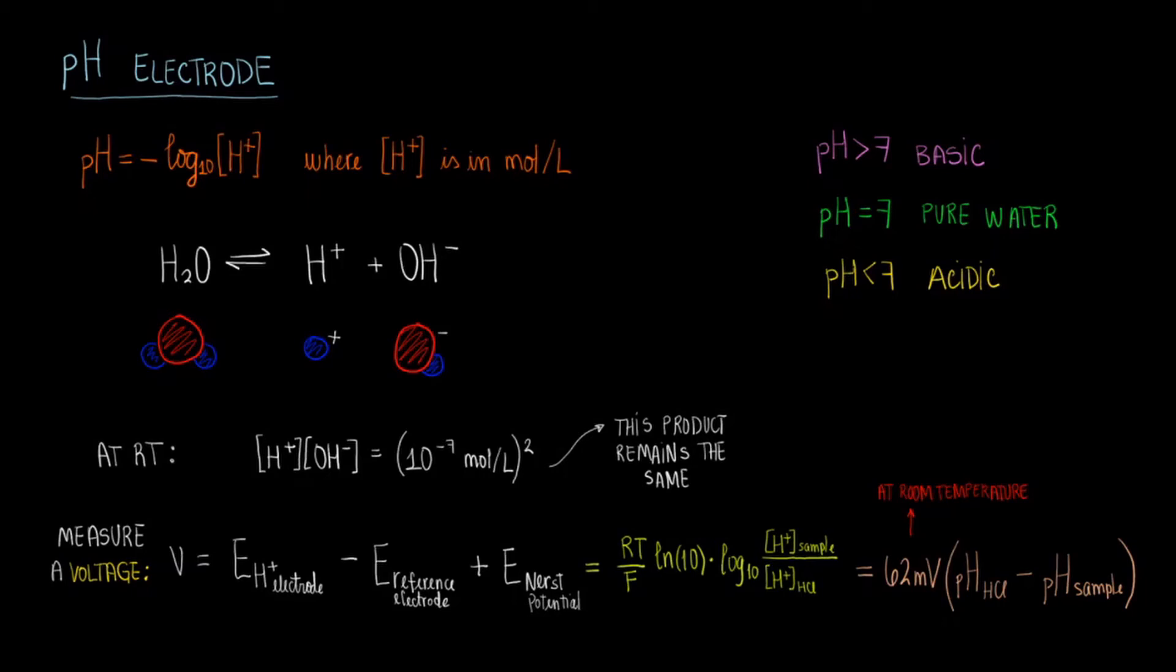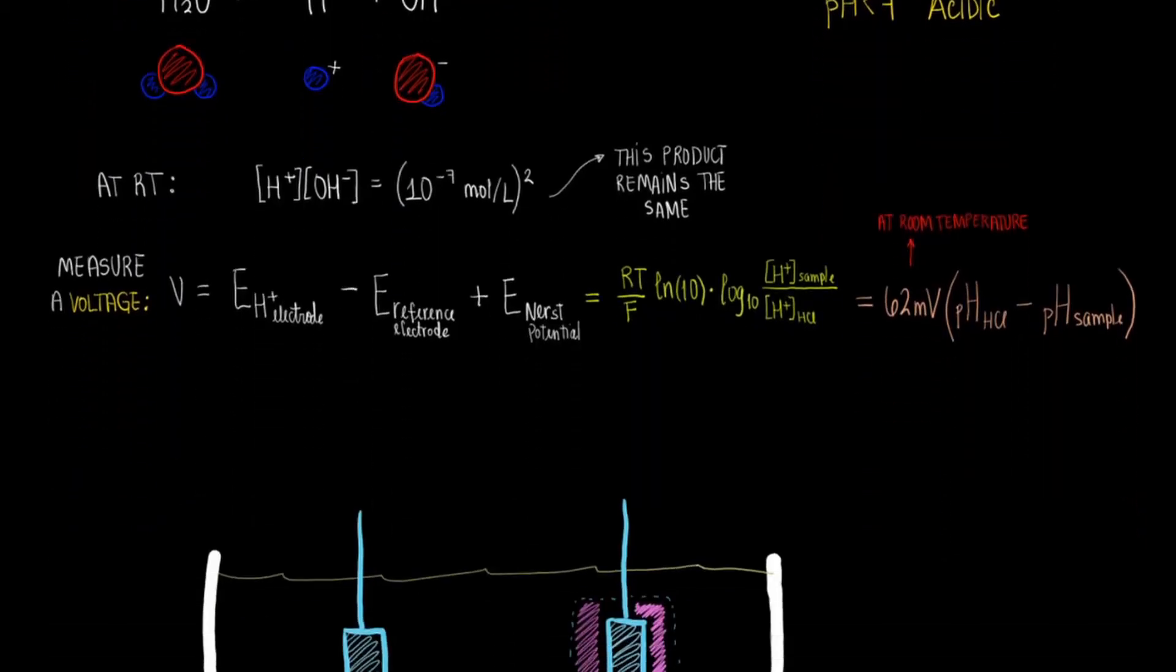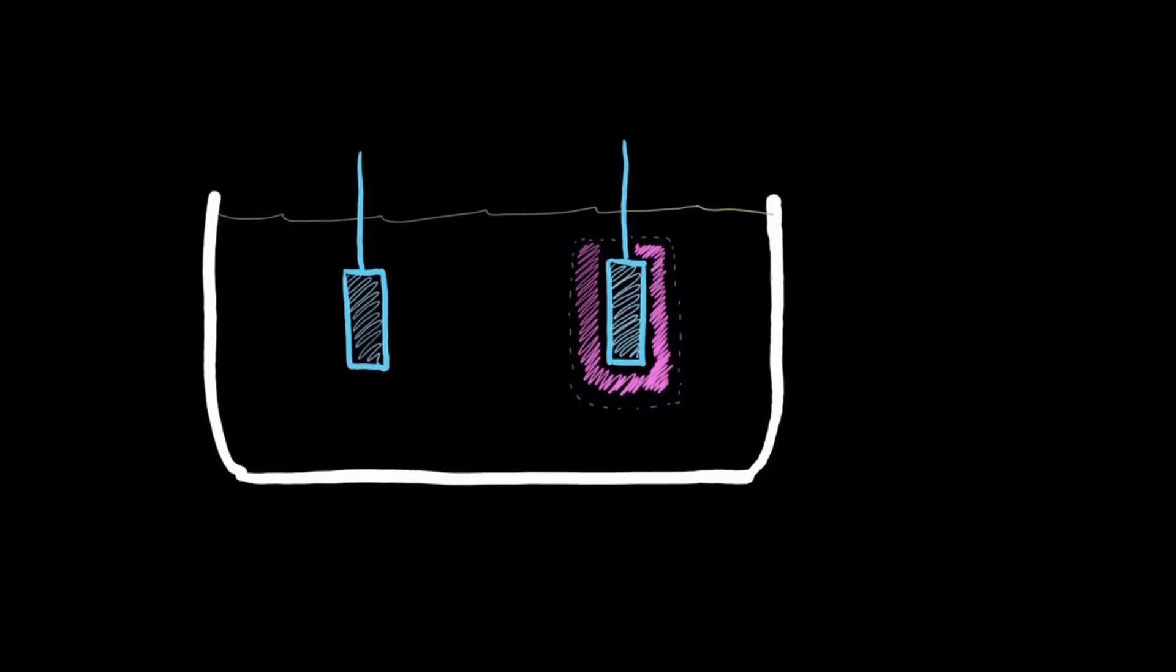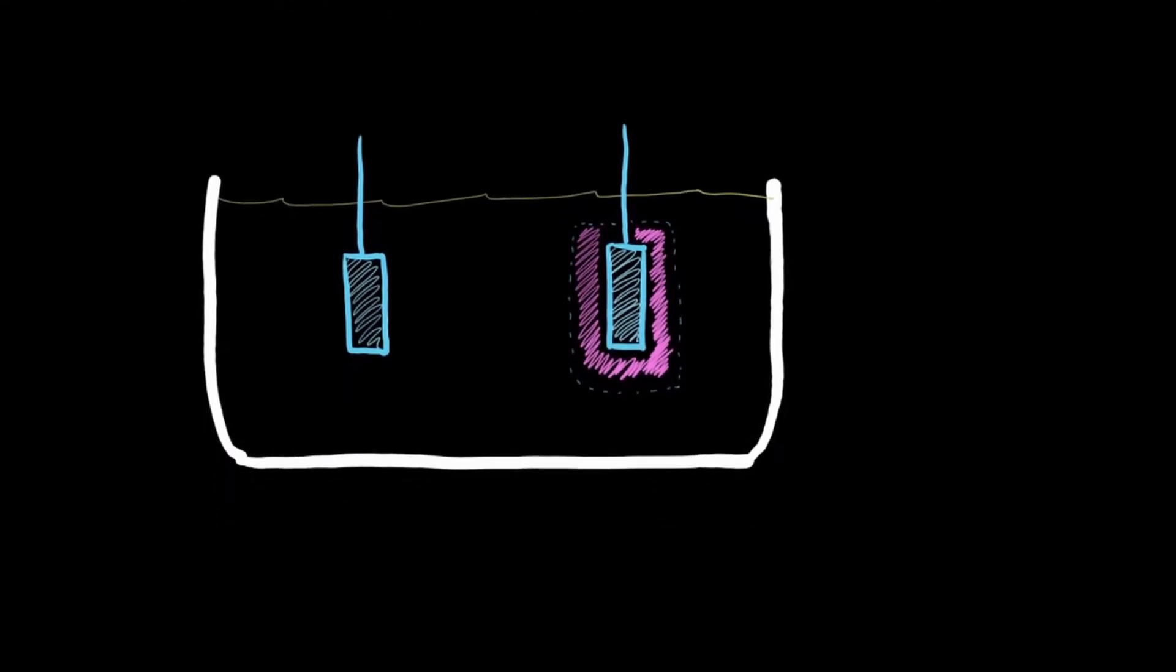Let's now make sense of what these terms mean. This is a very simple schematic of a pH electrode for the purpose of explaining its inner workings. Let's assume the sample you have selected is blood, which has a pH of about 7.4.